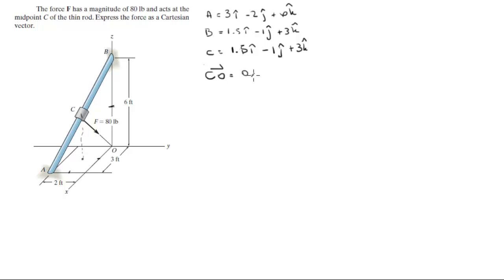Because if you're trying to find CO, you're going to do O in the x minus C in the x, i, plus O in the y minus C in the y, j, plus O in the z minus C in the z, k.